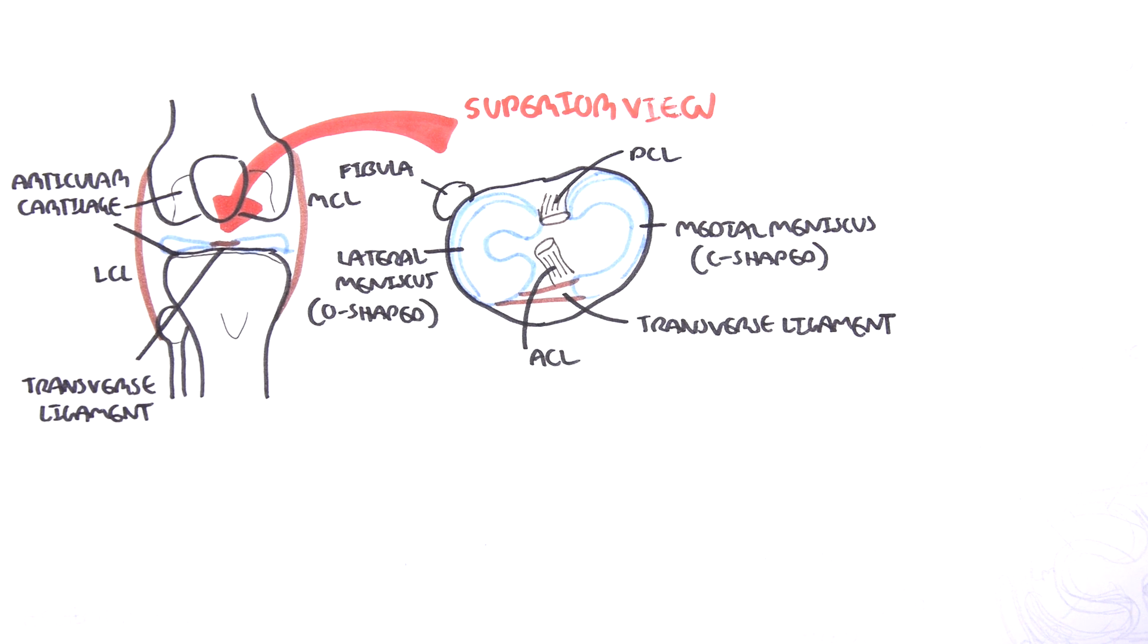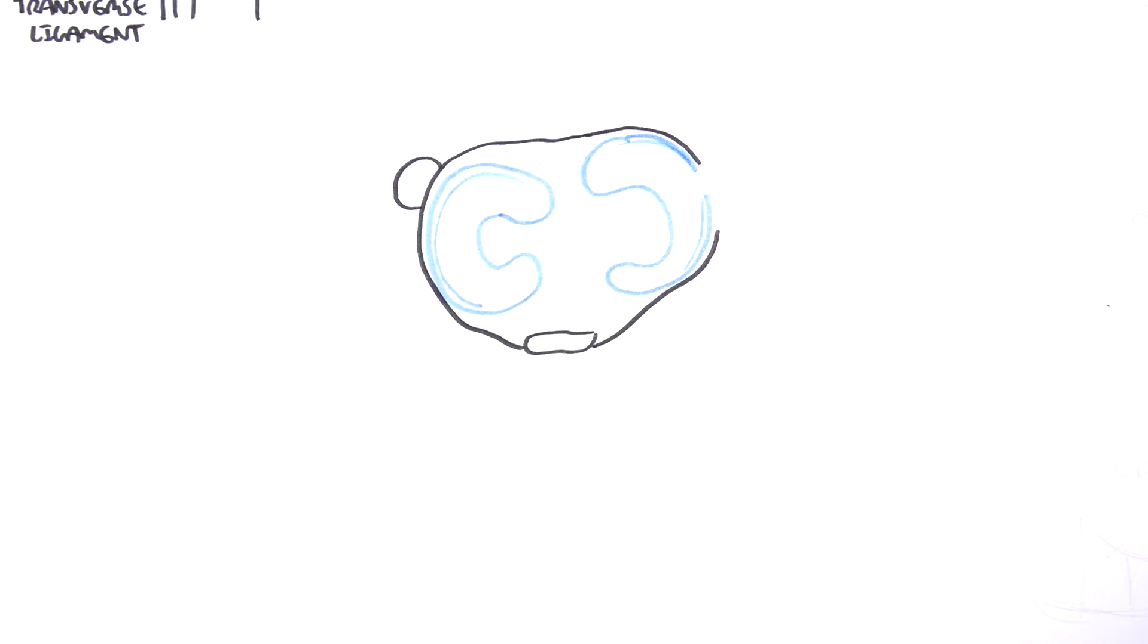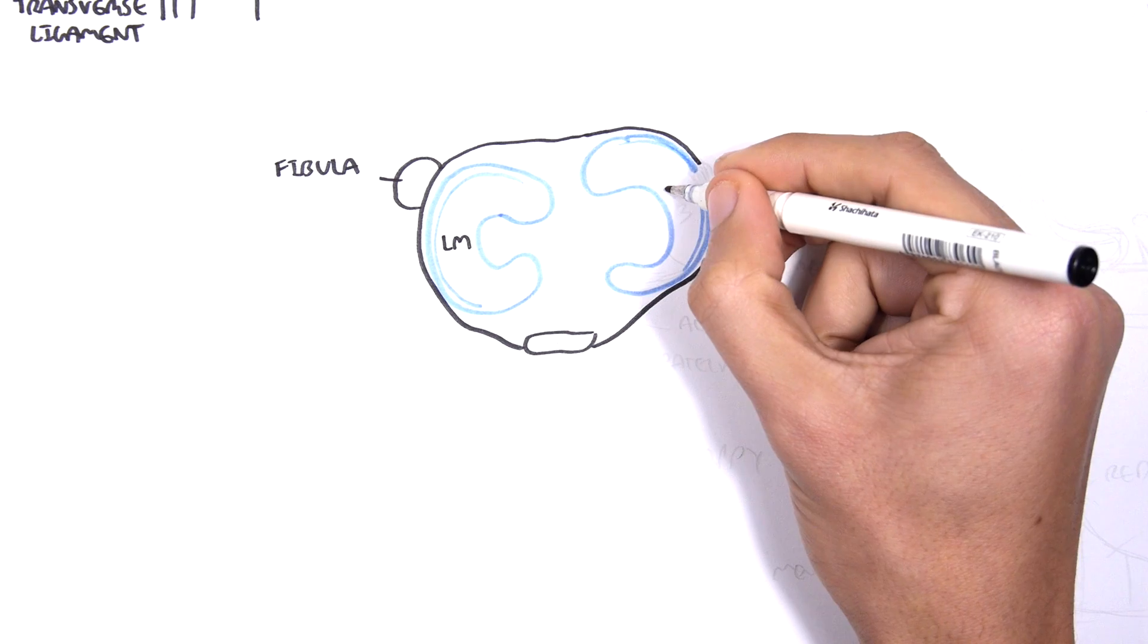So let us look at the superior view of the tibial bone, looking from the top. Now to orientate ourselves, here again you have your lateral meniscus. Then you have your fibula, the head of the fibula here. Then you have your medial meniscus.